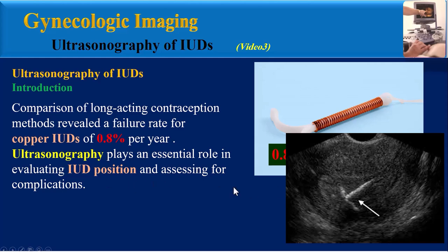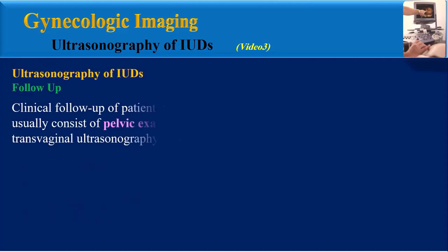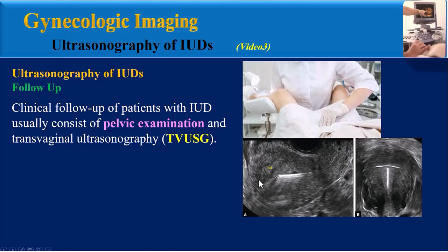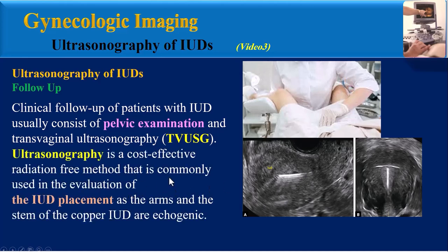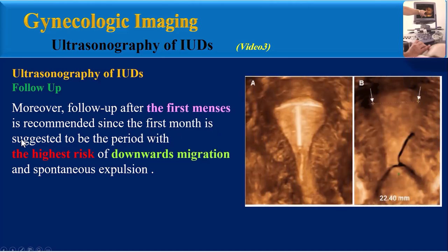Ultrasonography plays an essential role in evaluating IUD position and assessing for complications. Clinical follow-up of patients with IUDs usually consists of pelvic examination and transvaginal ultrasonography. Ultrasonography is a cost-effective, radiation-free method that is commonly used in the evaluation of IUD placement, as the arms and stem of the copper IUD are echogenic.